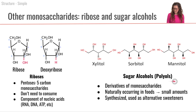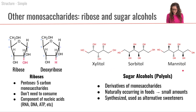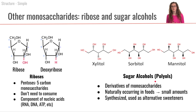Another category that falls within the monosaccharides are the sugar alcohols, also referred to as polyols. These are really derivatives of monosaccharides — they're not really sugar, they're not really alcohol — but they have a whole bunch of hydroxyl groups on them. Some common types are xylitol, sorbitol, and mannitol. There are small amounts of these sugar alcohols contained naturally in some foods, like in some fruits. But for the most part, our sugar alcohol or polyol intake comes from synthesized forms that are used as alternative sweeteners.